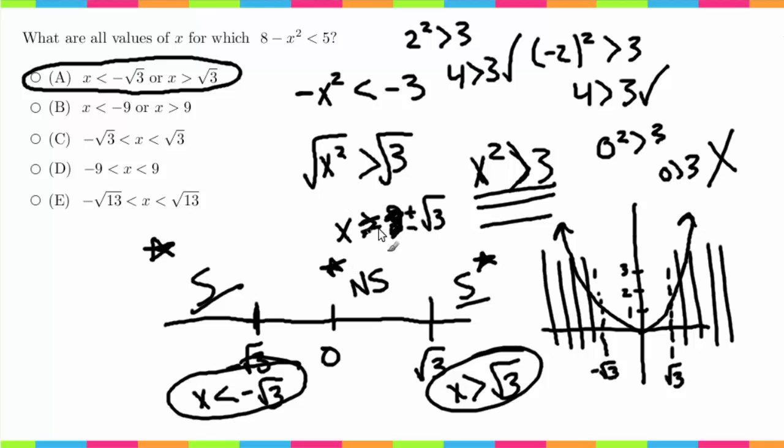So x equals plus or minus rad 3. Mark those down on the number line. Pick one number to the left. So you have this interval here. Pick one number over here. Pick one number in this interval. I'm going to make a mess of my screen. So in between these numbers, and then pick one interval on this side. So on this interval here.